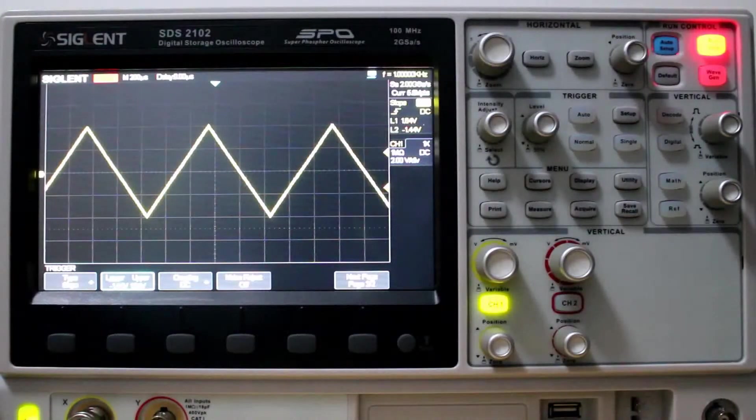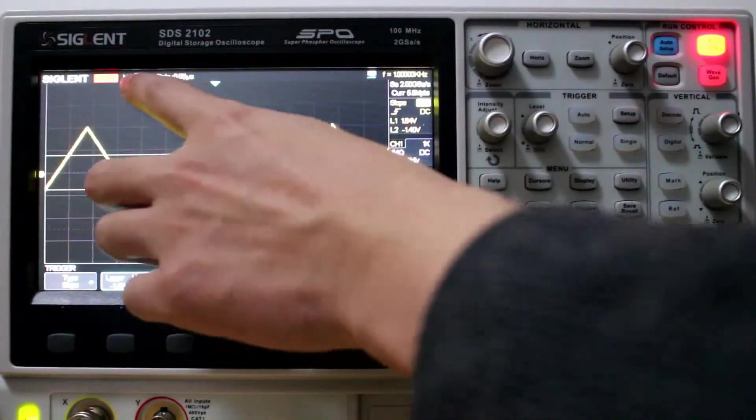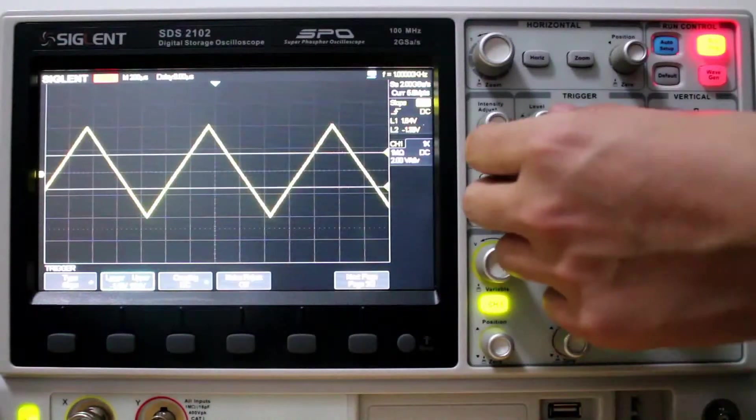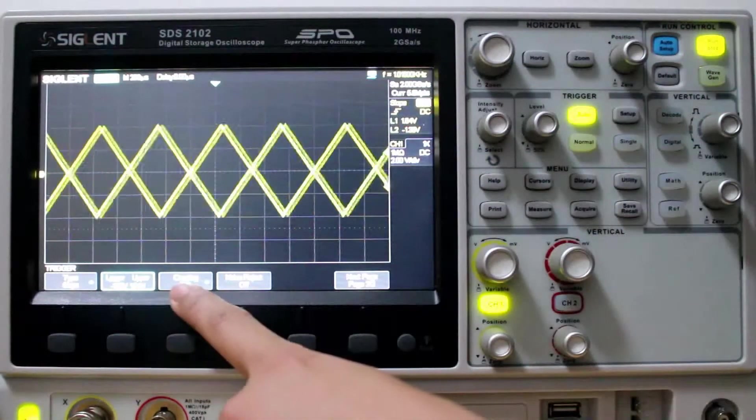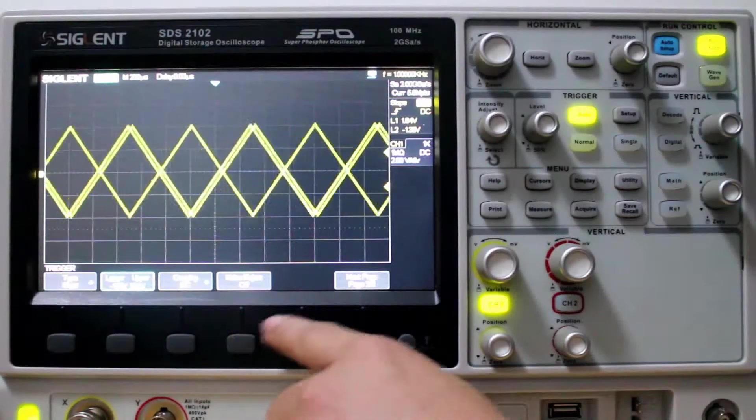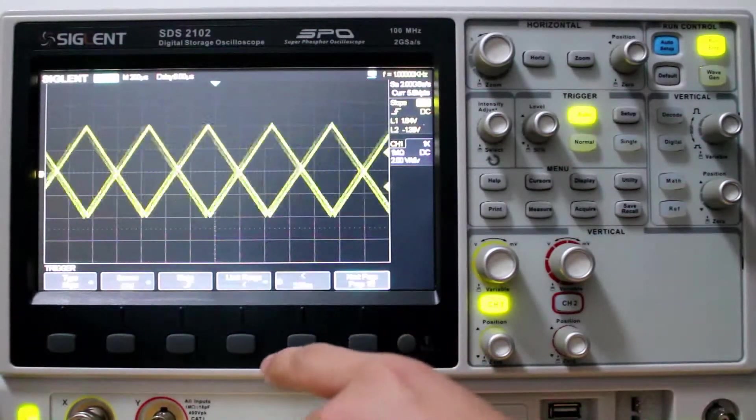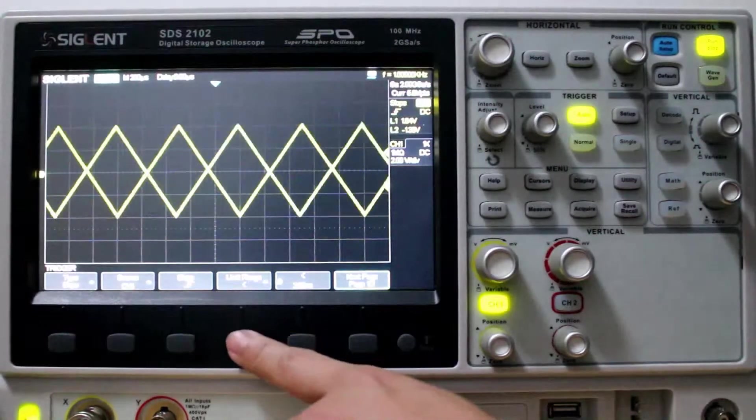So now we've got almost exactly the time base, which is 200 microseconds. So we've measured the distance there, the time. The coupling is set to DC. Noise reject. Doesn't make a difference.